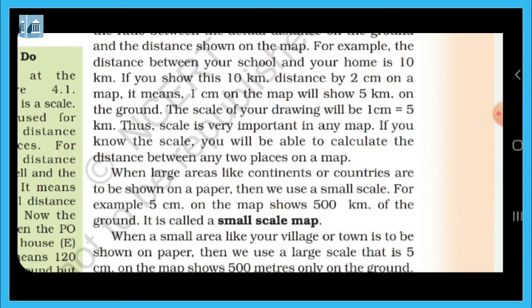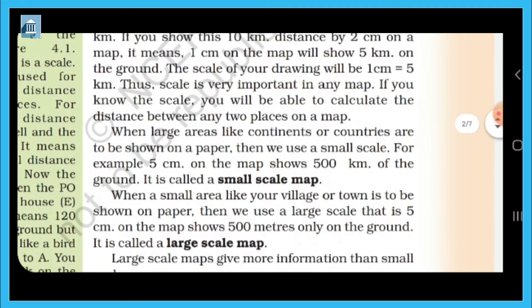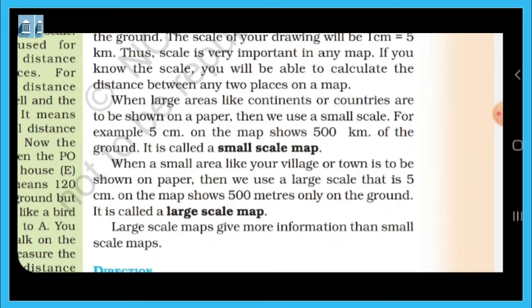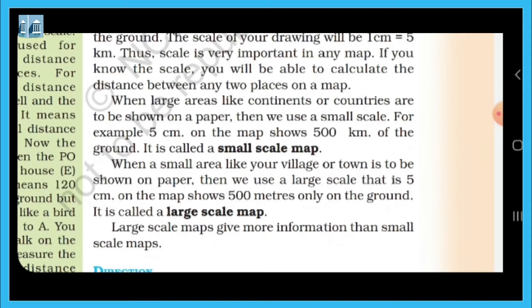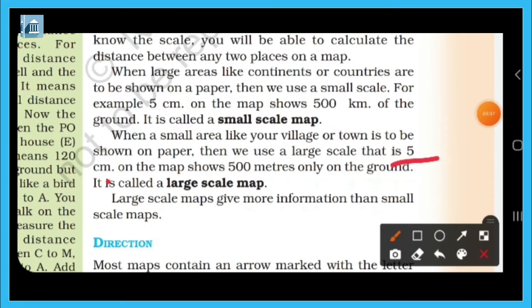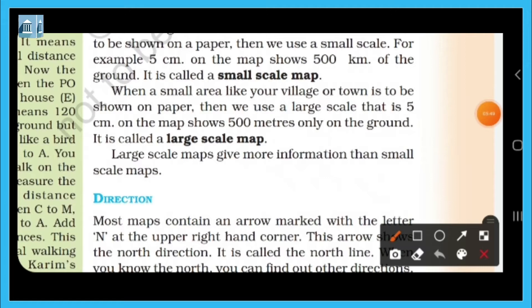So, 1 centimeter equals 5 kilometers. Scale is very important in any map. If you know the scale, you will be able to calculate the distance between two places on the map. For example, 5 centimeters on the map showing 500 kilometers on the ground is called a small scale map. A large scale map gives more information than a small scale map.